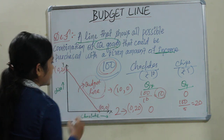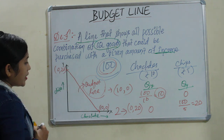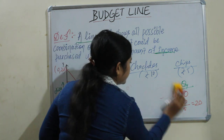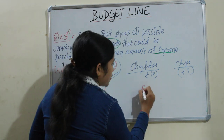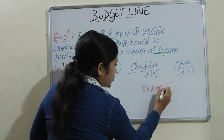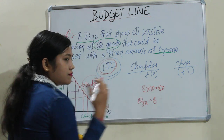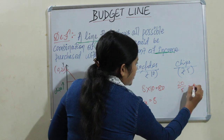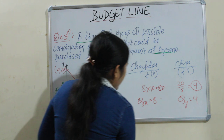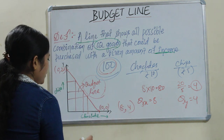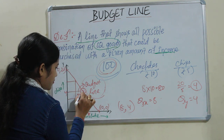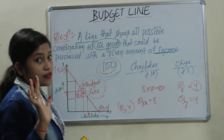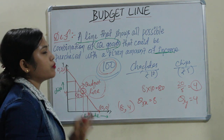This is your budget line. Under this line, you can do any combination. For example, suppose you want to purchase 8 chocolates — 8 into 10 equals 80 rupees, so Qx equals 8. With the remaining 20 rupees, 20 divided by 5 equals 4 chips. So Qy equals 4. You can take 8 chocolates and 4 chips — any combination under the budget is possible. So this is all about how we plot our budget line.